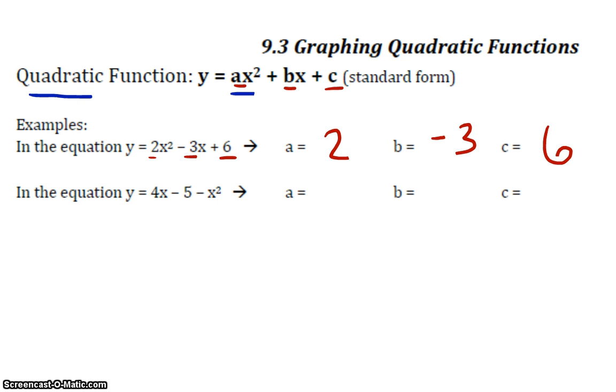All right, so you should have a is negative 1. Remember, a is the coefficient of the x squared term, right there. b is 4, the coefficient of the x term, and c is negative 5, the lonely one without an x.